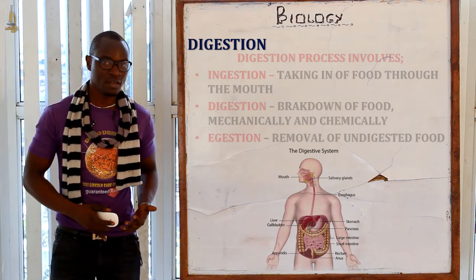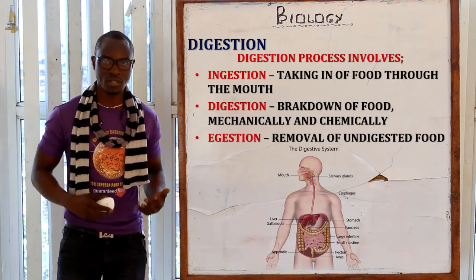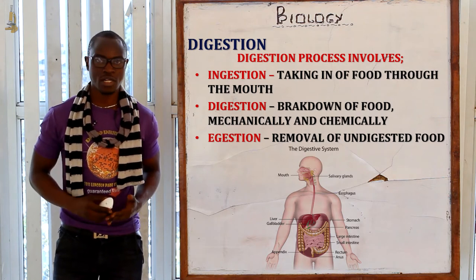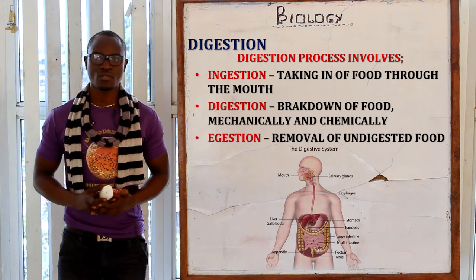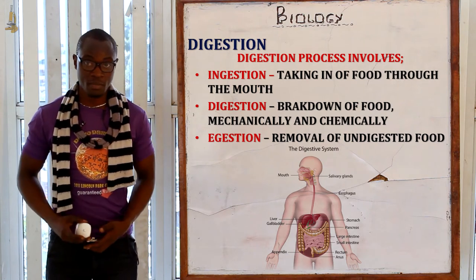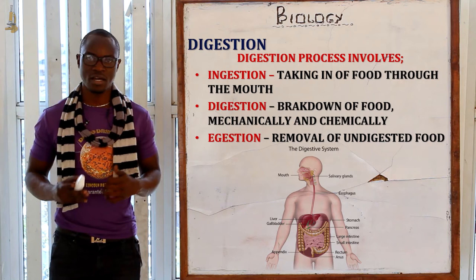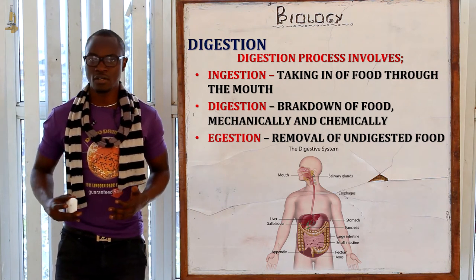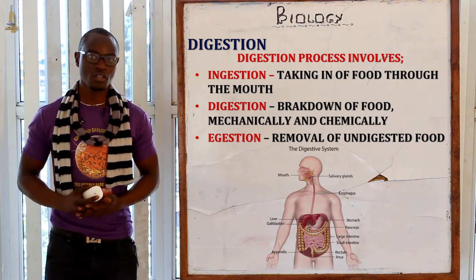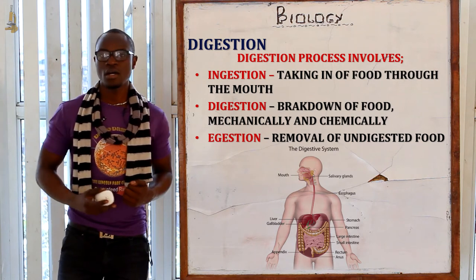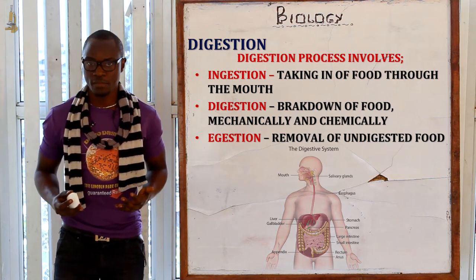Digestion basically has three main parts: the first part is ingestion, the second part is digestion, and the last part is egestion. Ingestion is the process whereby food is taken in through the mouth. Digestion is the process where food is broken down into particles absorbed into the bloodstream. And egestion is the removal of undigested food particles from the body.